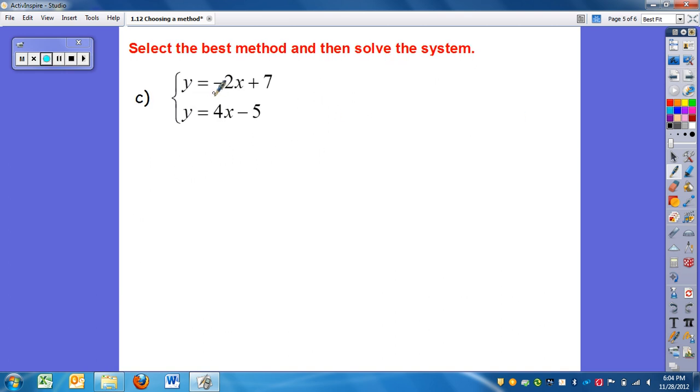So the last method is very unique. Notice it is set up for graphing. So you can graph. However, I'm not guaranteed to get the right answer. So again, I'm not going to use graphing. The other two methods could work too. The variables line up. So I could use elimination. Or I could use substitution since I have y equals and y equals. I'm going to do substitution on this one. So y equals 2x minus 7. So I'm going to replace the y in the second equation.